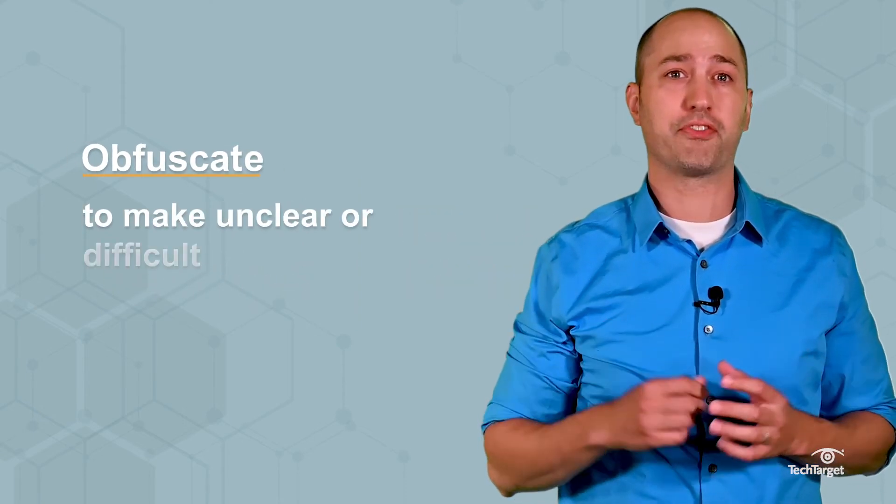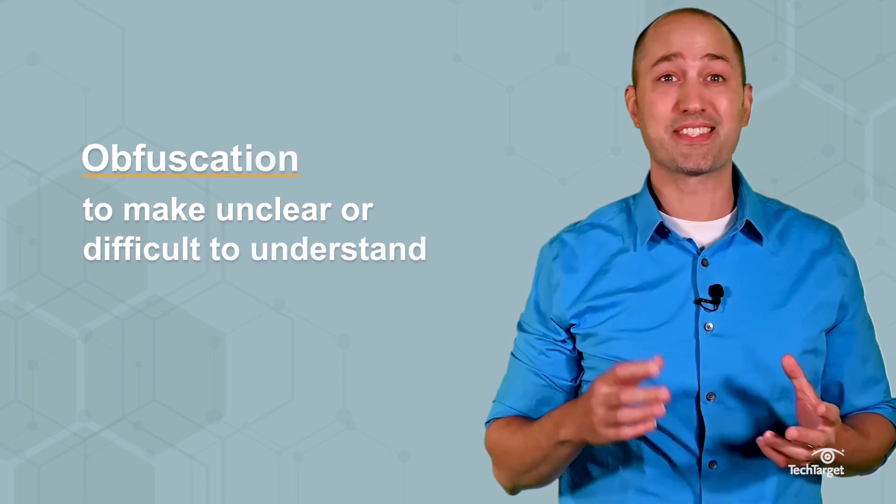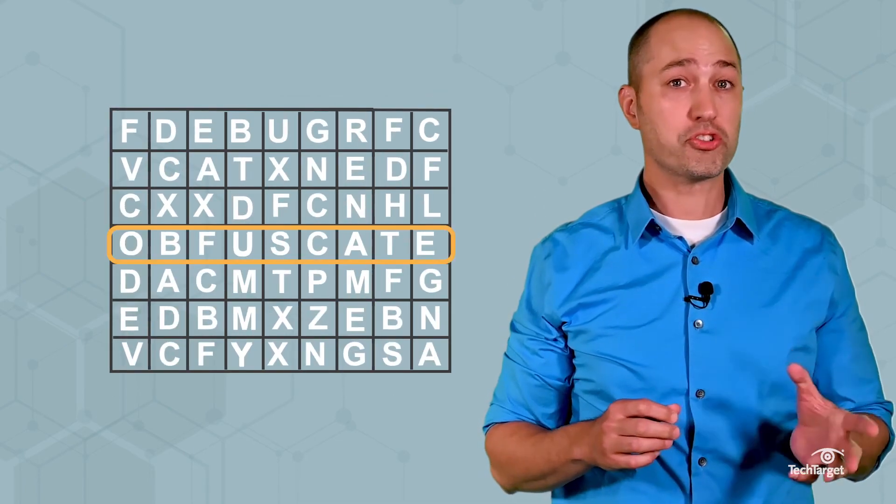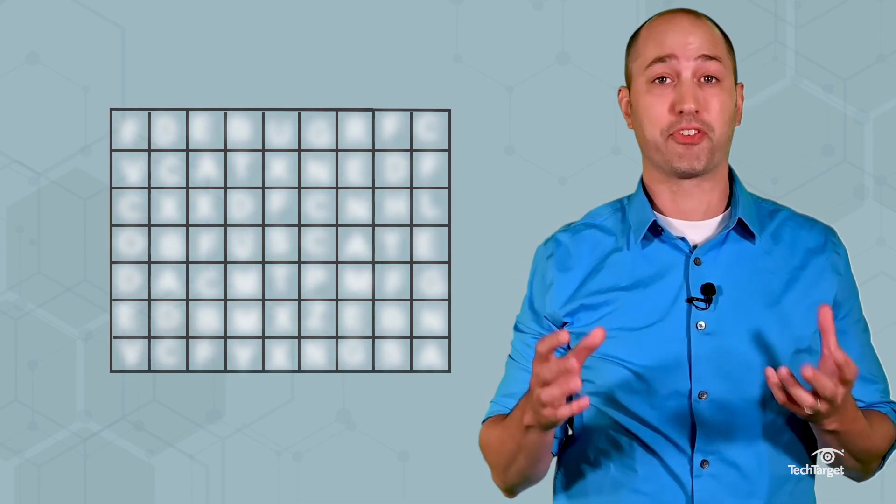To obfuscate is to make unclear or difficult to understand. Obfuscation is the same, just within program code. It's like an extremely difficult word search. The words are all there but obfuscated to make them difficult to find.